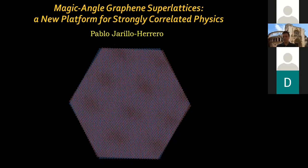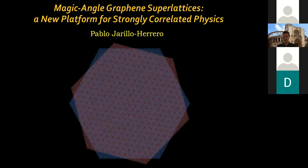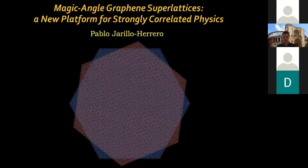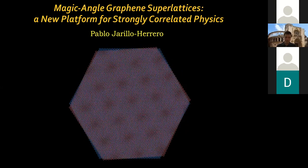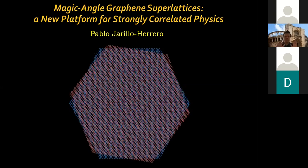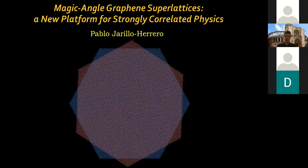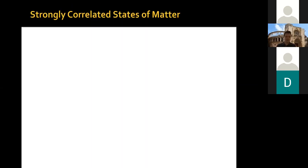Today's going to be a more introductory talk, and tomorrow I will go into more detail on recent developments in my group and what's happening in the field overall. I want to start from a general point of view: strongly correlated states of matter are pretty much ubiquitous in all of physics — not only condensed matter physics but all of physics — and among the most fascinating states of matter in the universe are such strongly correlated states.